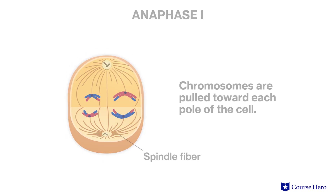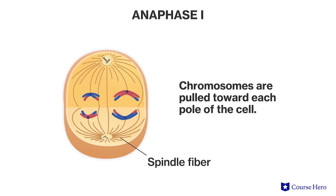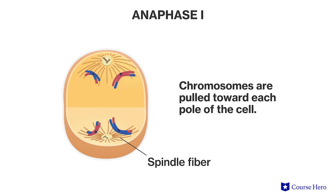The shortest stage of meiosis one is anaphase one. Here, the spindle fibers pull one chromosome from each tetrad toward each end of the cell. Each chromosome still has two chromatids. The effect of crossing over can now be seen clearly, with each chromosome containing a bit of DNA from its homolog.